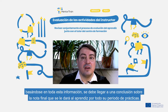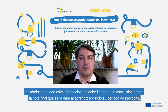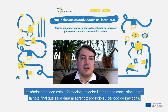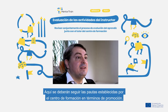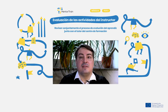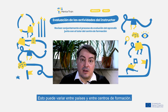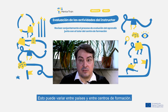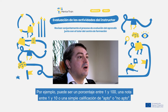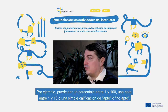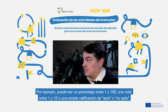Based on all this information, you should come to a conclusion on the final mark you will give the apprentice for the entire apprenticeship. Here you will have to follow the guidelines of the education center in terms of how the grading should be done. This can vary between countries and between education centers — for example, a percentage between 1 and 100, a mark between 1 and 10, or a simple pass or fail statement.